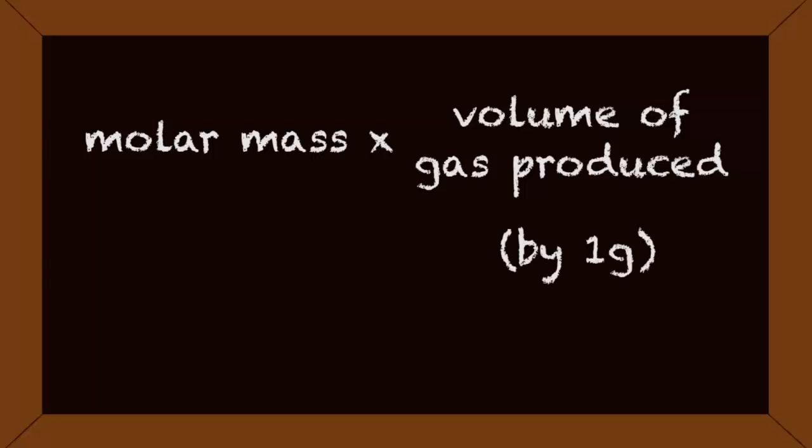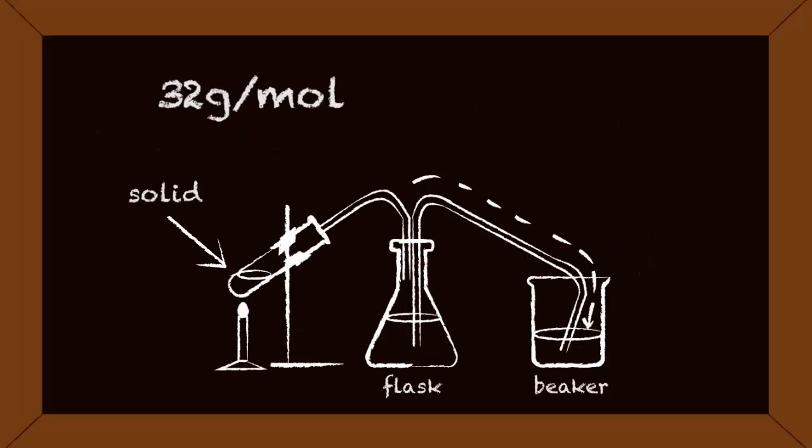Finally, by multiplying the molar mass of oxygen by the volume of gas produced by 1 gram of oxygen molecules, you can calculate the experimental molar volume for oxygen gas. This you do by multiplying 32 grams per mole by 0.753 liters.